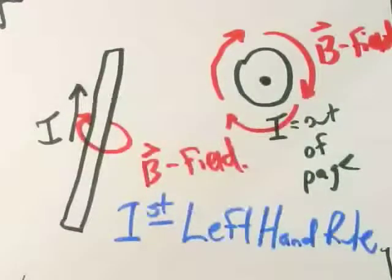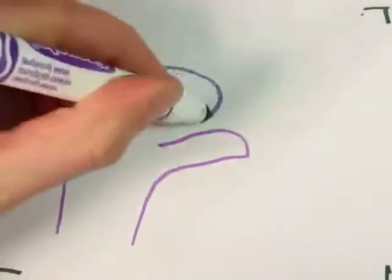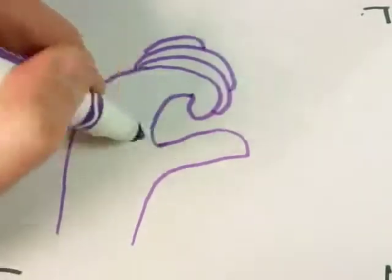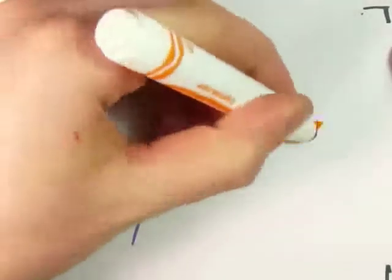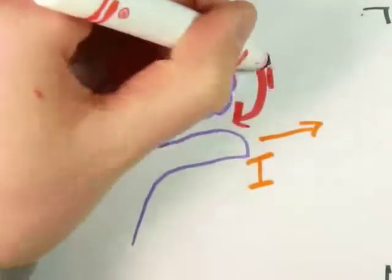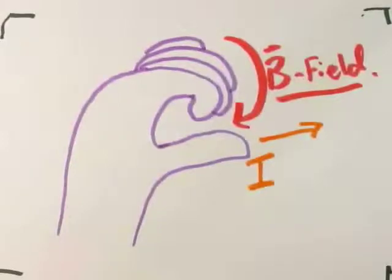You ever see a physicist doing something weird with their hand? Hurling it like this. And it looks like they're maybe trying to crush your head. No, they're actually just figuring out something with the first left-hand rule. Where your thumb is the current and your fingers curl in the direction of the magnetic field.